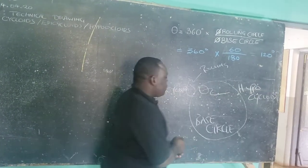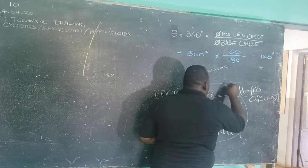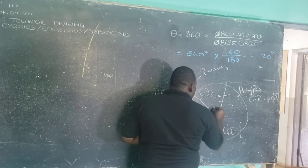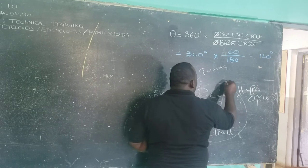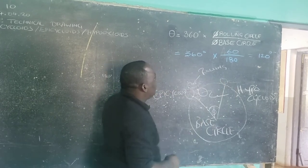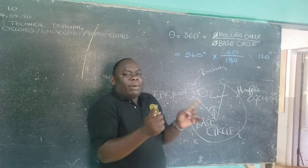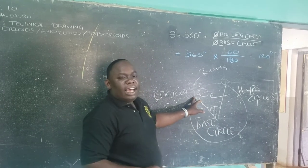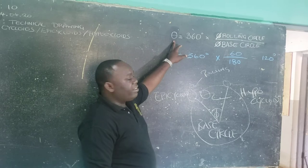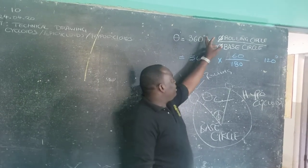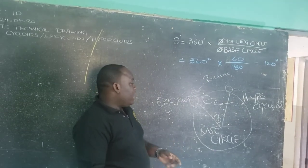As the circles roll, there will be what is termed an internal angle, theta. This circle will roll and make a complete revolution, and the internal angle is the span through which P travels as the rolling circle makes one complete revolution. We can find this angle using the formula: 360 degrees times the diameter of the rolling circle divided by the diameter of the base circle.